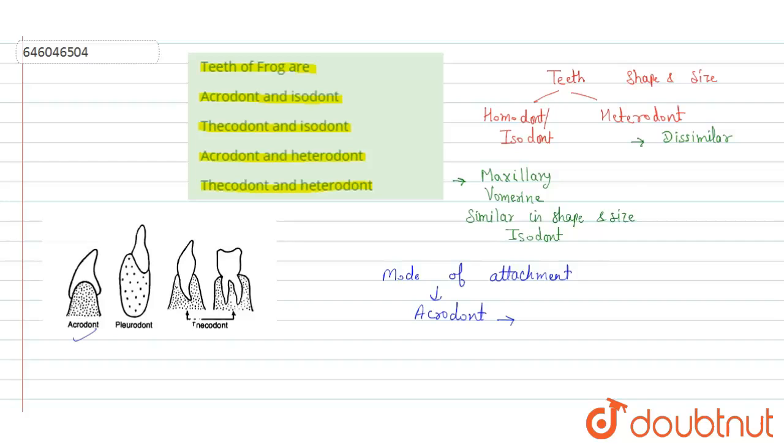Acrodont means that teeth are not embedded in the socket, as similar to that of the thecodont. In this we are finding that the teeth are embedded in socket of the jawbone.